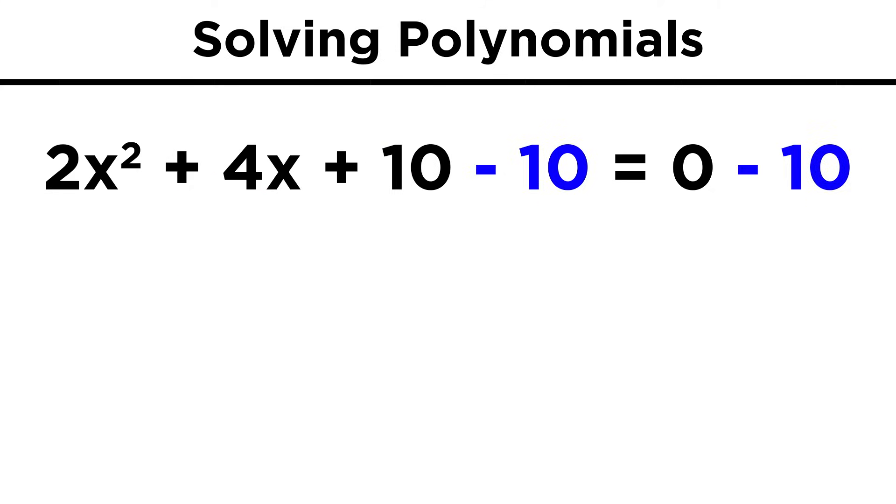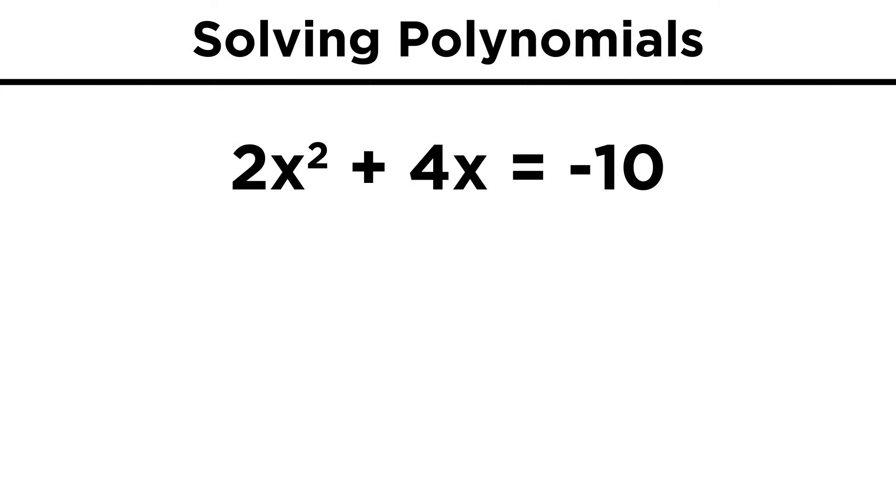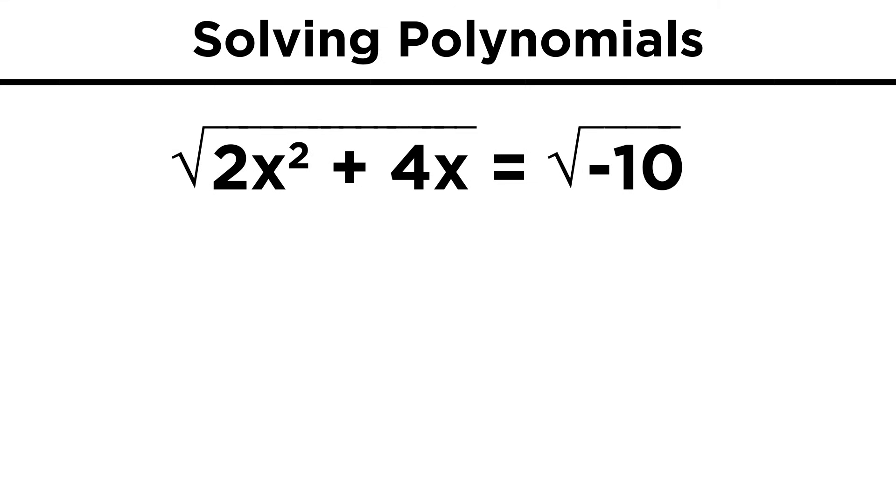We could subtract ten from both sides, but then we are pretty much stuck. If we take a square root to try to lose the exponent, we get roots involved, so it would seem that we have no course available to solve for x.